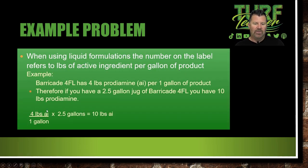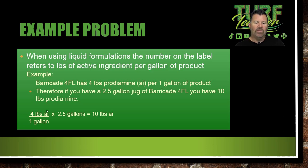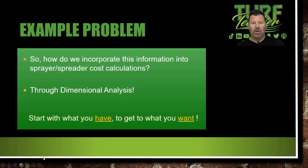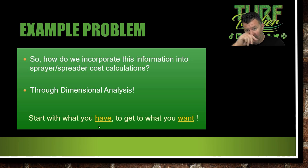When using liquid formulations, the number on the label refers to active ingredient per gallon of product. Example: Barricade 4FL has 4 pounds of prodiamine active ingredient per 1 gallon of product. Therefore, if you have a 2.5-gallon jug of Barricade 4FL, you have 10 pounds of prodiamine — 4 pounds active ingredient per gallon times 2.5 gallons equals 10 pounds active ingredient. So how do we incorporate this information into sprayer/spreader cost analysis or calculations? Through dimensional analysis. I'd like to thank Dr. Reynolds for examples of this — I learned a lot from him. He was at NC State and now he's down at Texas A&M.